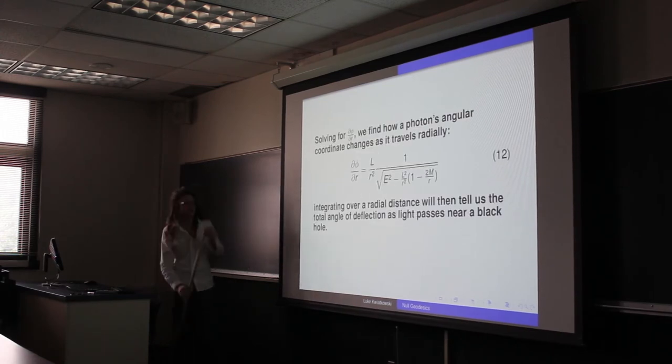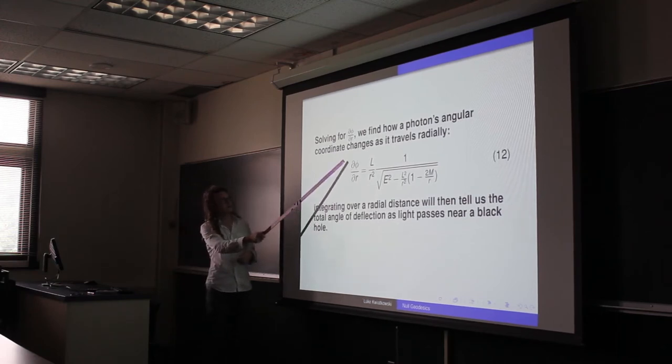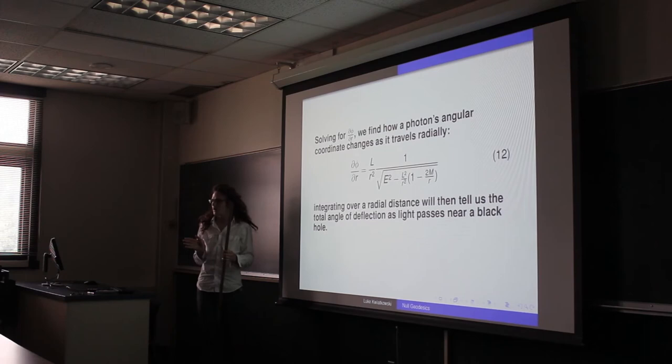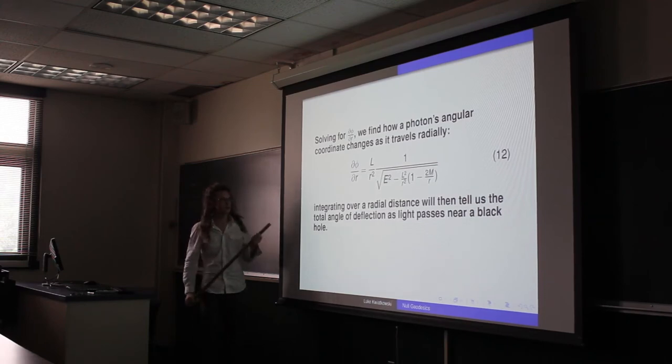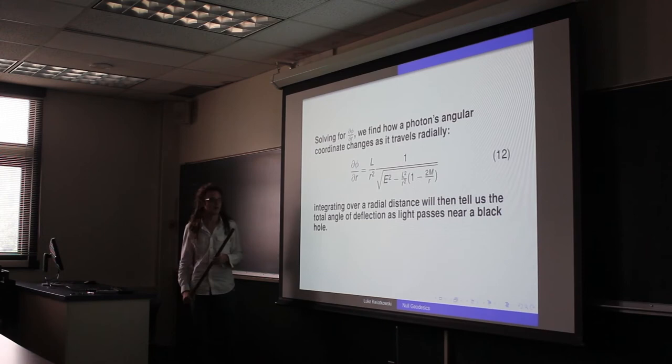So another thing we can do to analyze this, we can solve for the derivative of phi with respect to r to see how the path of light is bent as a function of what distance it travels in the radial direction. And of course we can integrate this over a radial distance to find the total angle of deflection as it goes around the black hole.